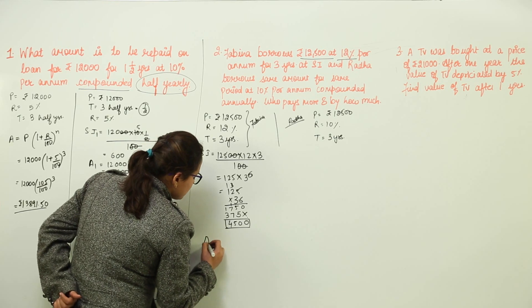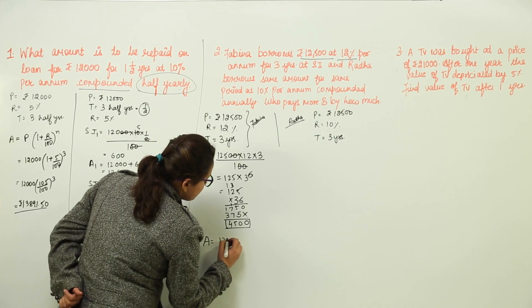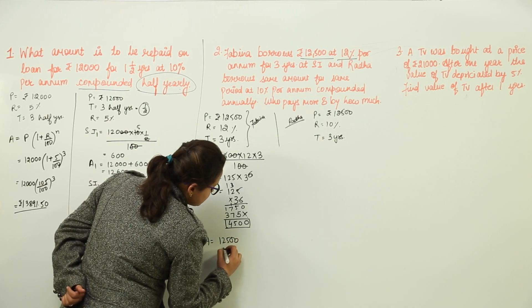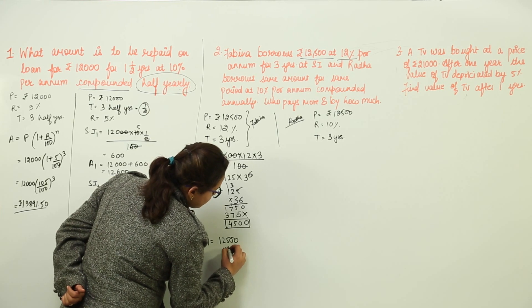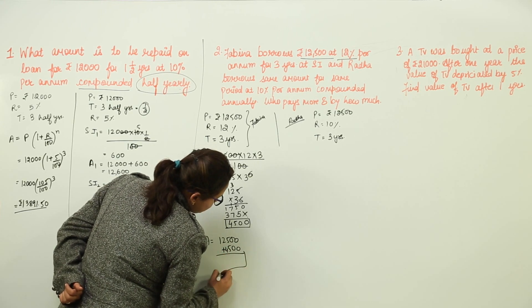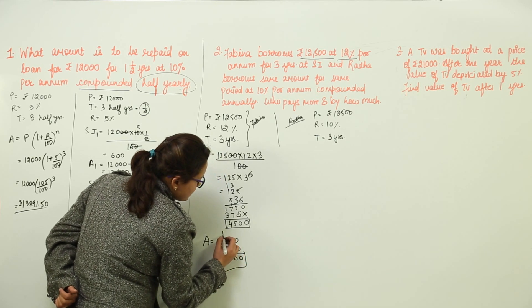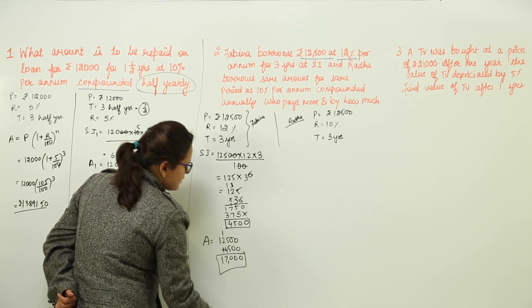What will be the amount for her? It would be 12,500 plus 4,500. That would give us the amount 17,000.